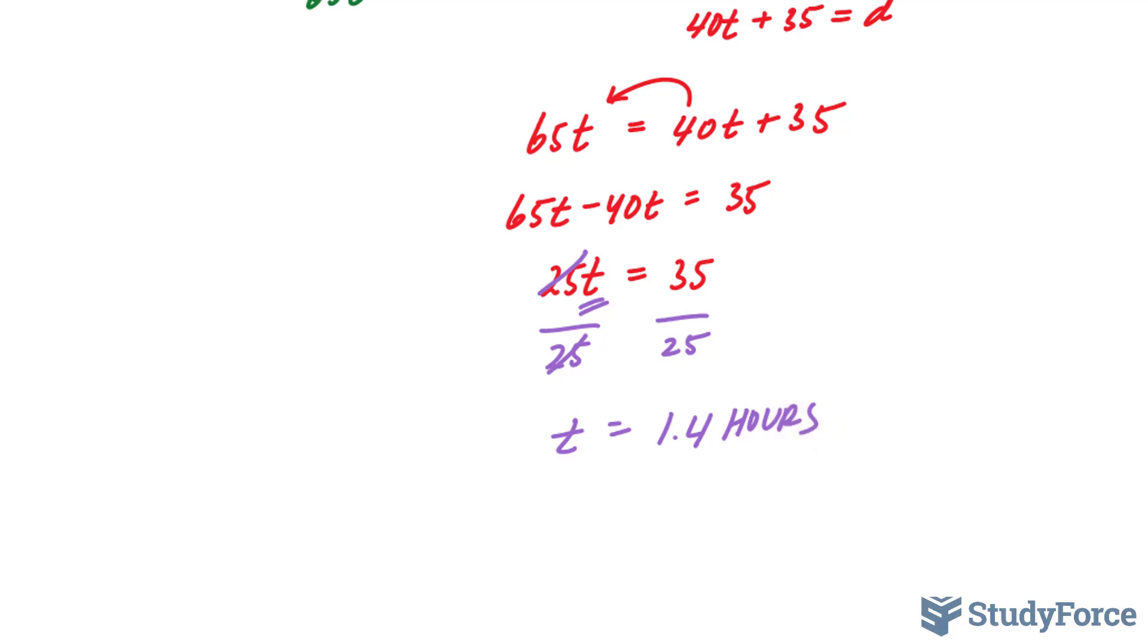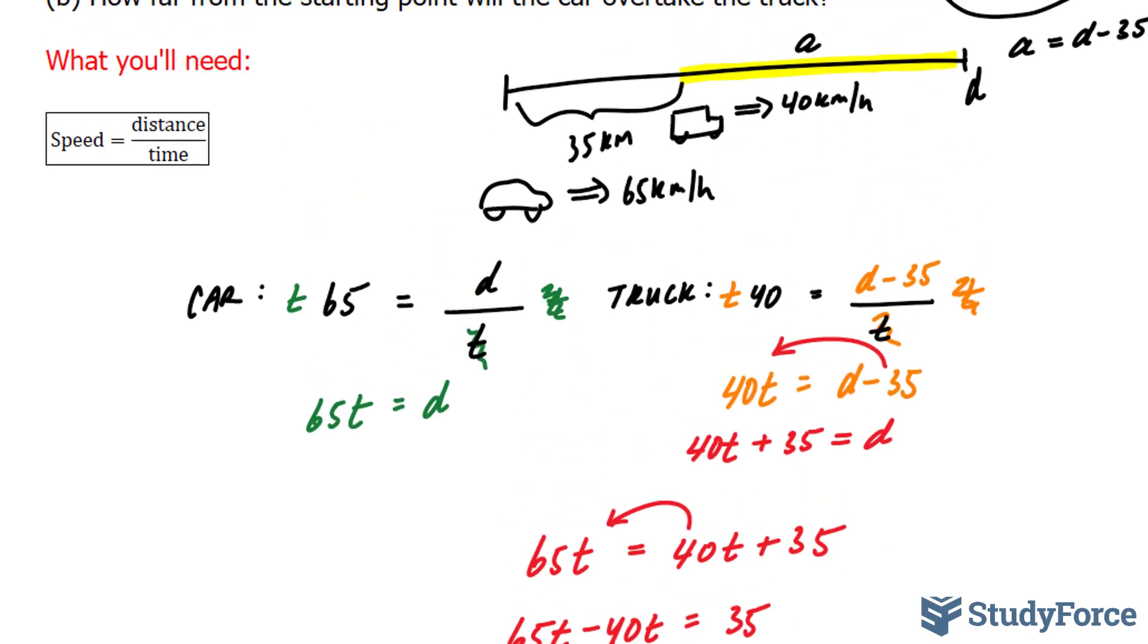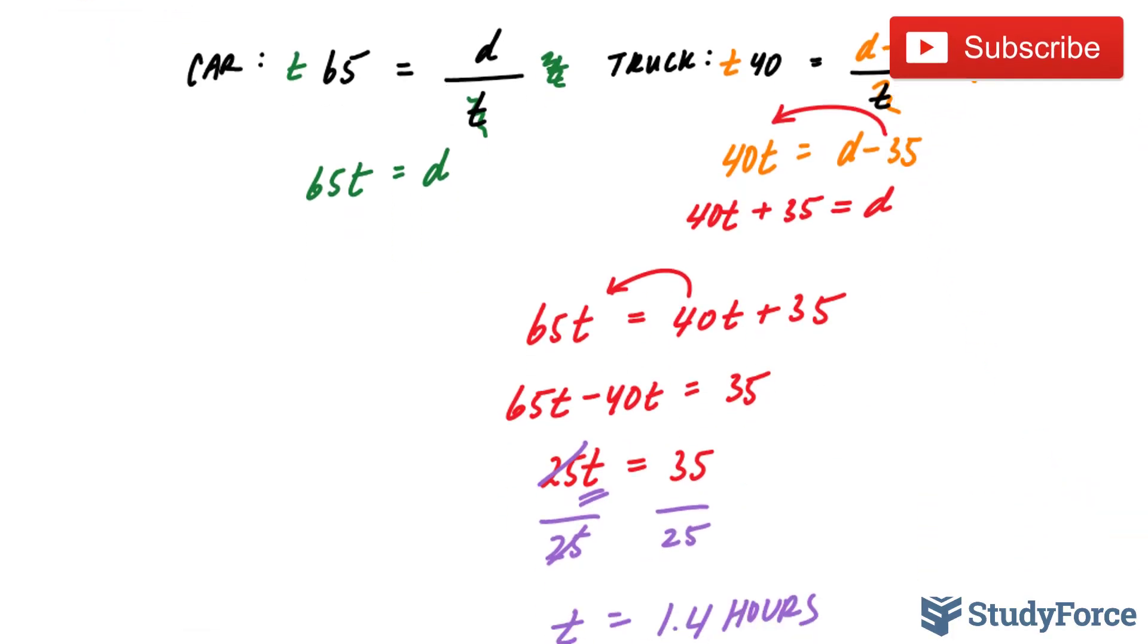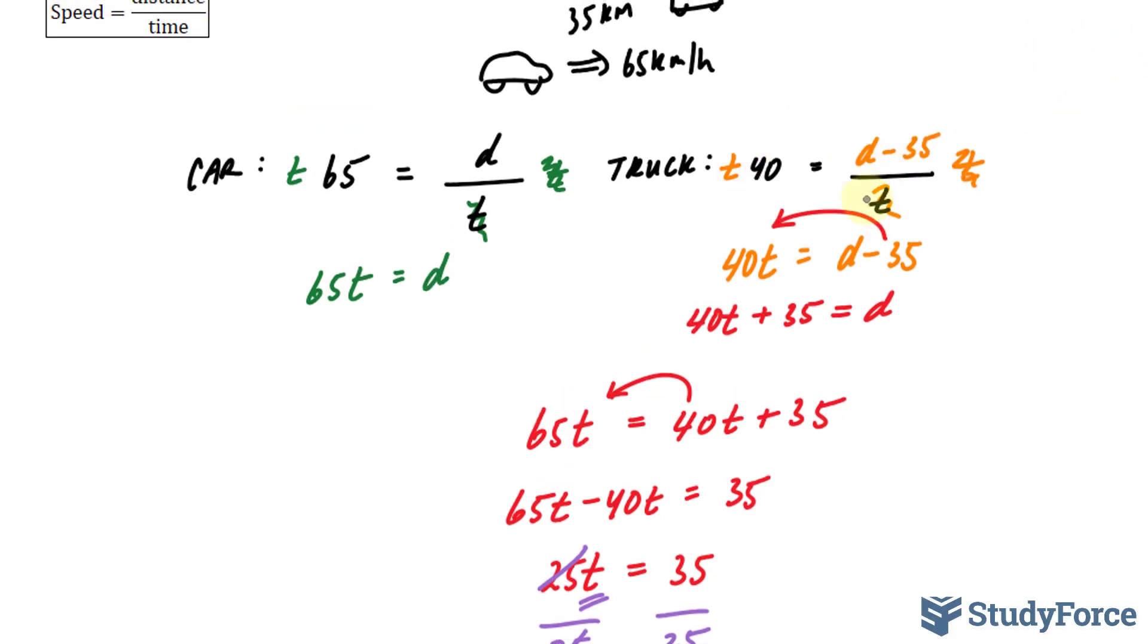The car and the truck will meet each other at this point D within 1.4 hours. The next step is to solve for my distance. To do that, I'll take my time T of 1.4 and substitute it into this equation. I can also substitute it into this equation, the original one. It's up to you. Usually, you choose the equation that is simpler.